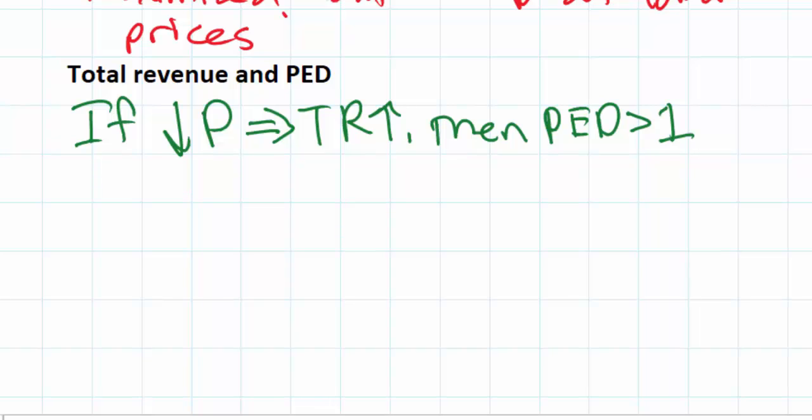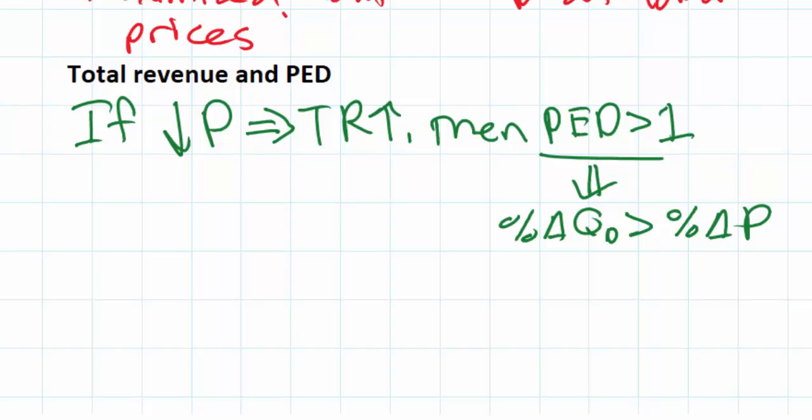How do we know that? Because a PED value of greater than 1 means that the percent change in quantity demanded was greater than the percent change in price. A decrease in price of a particular percentage will lead to a proportionally larger increase in the quantity demanded. For that reason, a decrease in price would cause firms' total revenues to go up.